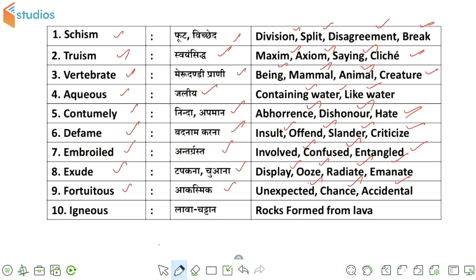And the last word we have, this is igneous, जिसकी meaning होती है लावा या चट्टान — लावा चट्टान. इसके synonyms हैं, इसकी meaning है: rocks formed from lava.